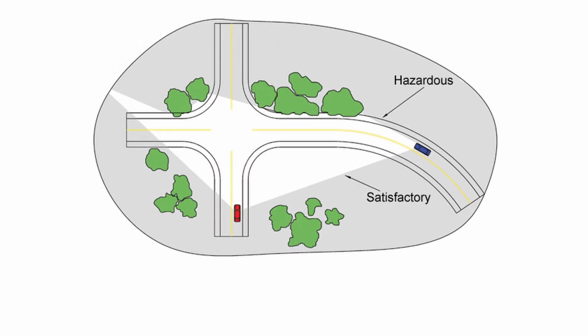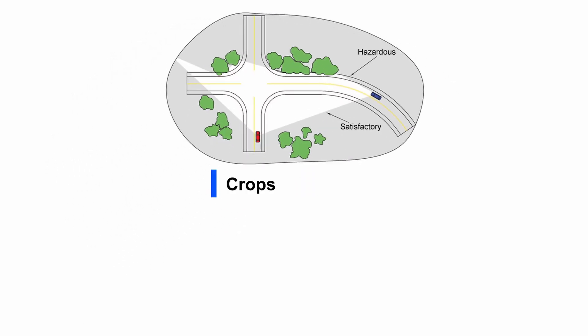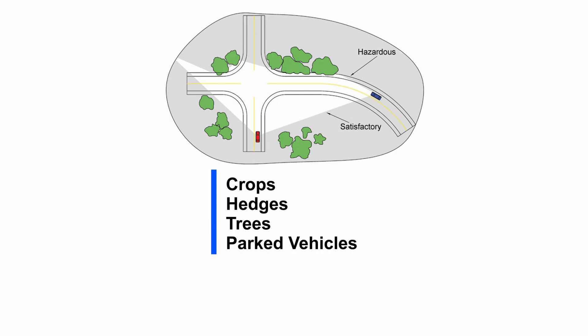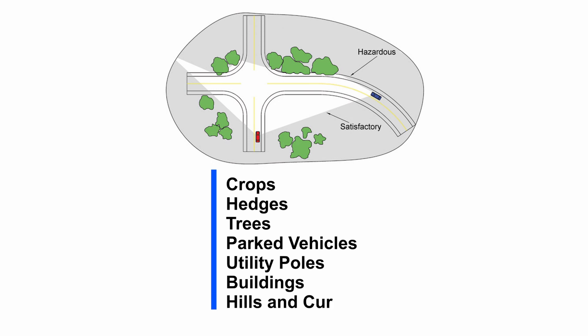Examples of obstructions include crops, hedges, trees, parked vehicles, utility poles, or buildings. In addition, hills and curves as you approach the intersection can reduce the sight triangle of vehicles navigating the intersection.